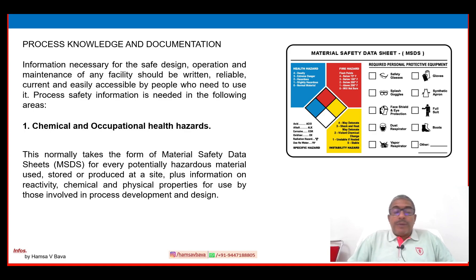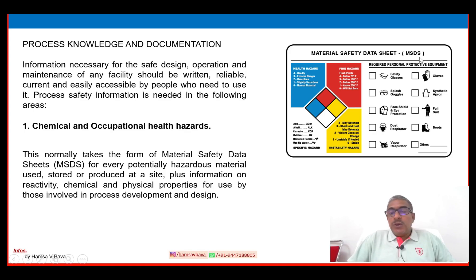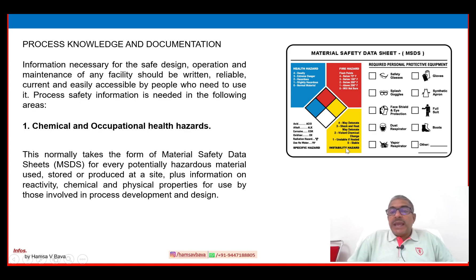Number one: process knowledge and documentation. The first area is chemical and occupational health hazard. This normally takes the form of a Material Safety Data Sheet — MSDS. You can see on the right side an MSDS data sheet. MSDS is required for every potentially hazardous material used, stored or produced at a site, plus information on reactivity and chemical and physical properties for use by those involved in process development and design.